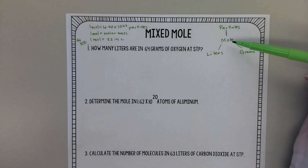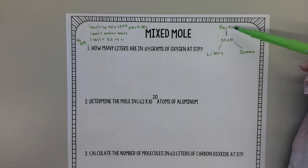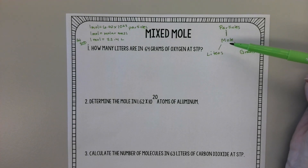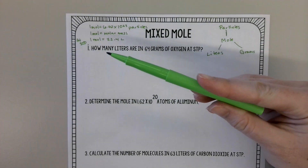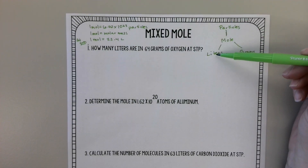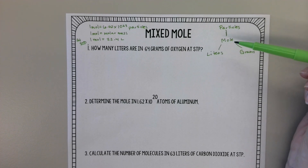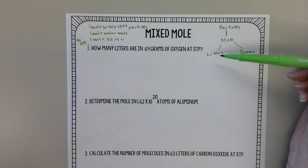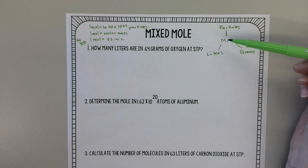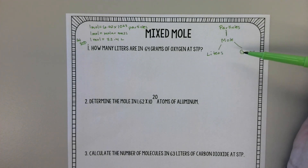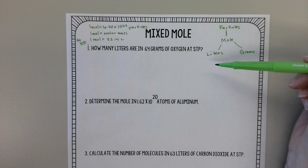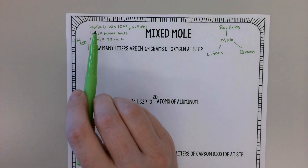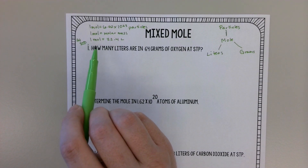The mole is the center of everything. We know how many particles are in a mole, we can find how many grams are in a mole, and at STP we can figure out how many liters are in a mole and vice versa. Our problems today might be going from particles to liters, or just a simple mole to grams problem, and we're going to use this map along with our three conversion factors to help solve each problem.